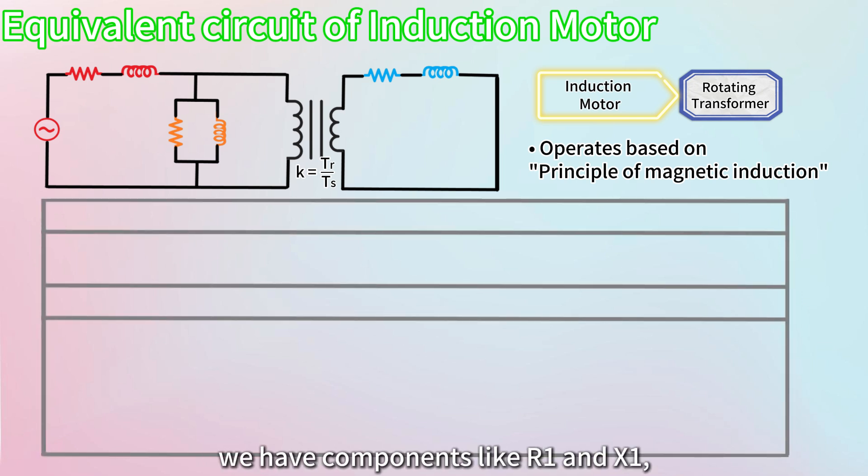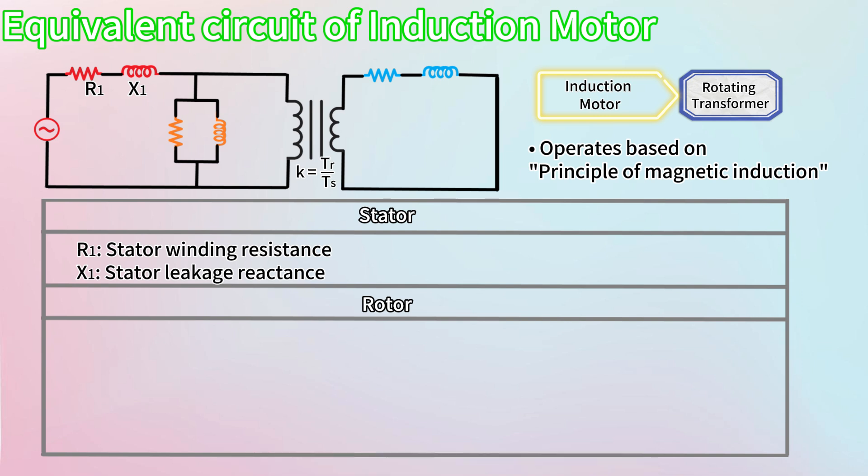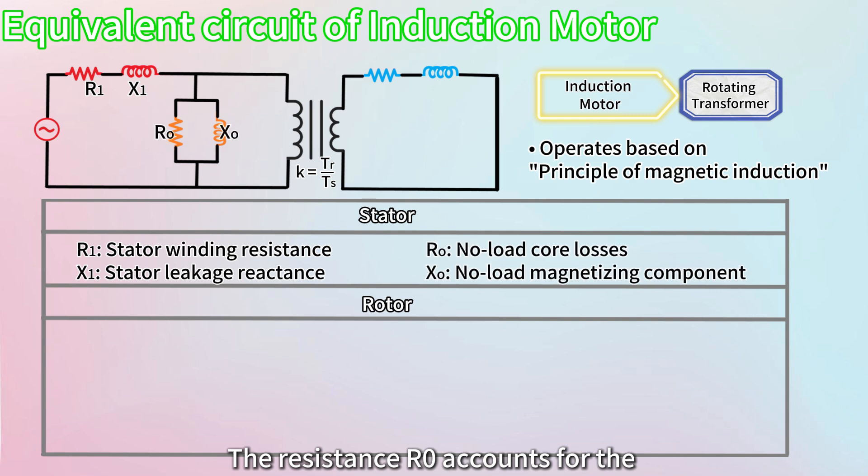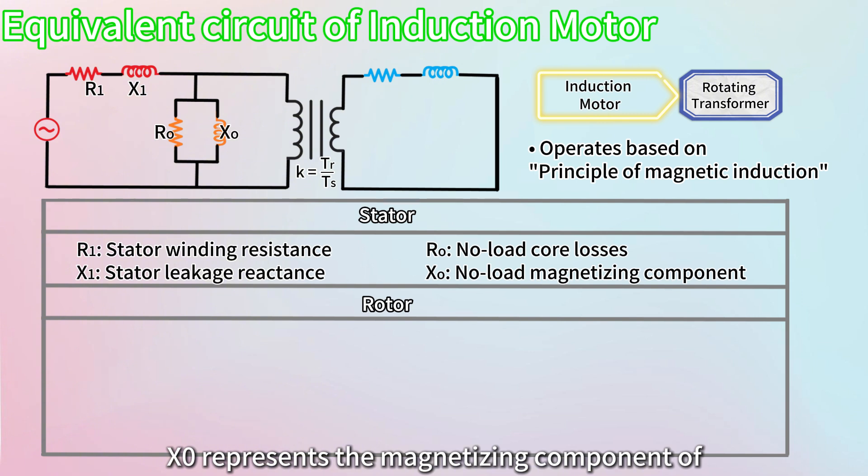In the equivalent circuit, we have components like R1 and X1, representing the stator's winding resistance and leakage reactance. The resistance Rc accounts for the no-load core losses, while X0 represents the magnetizing component of the no-load current.